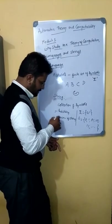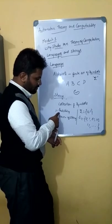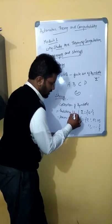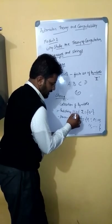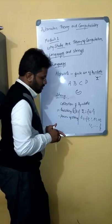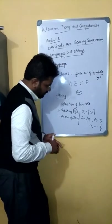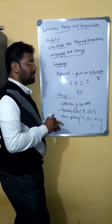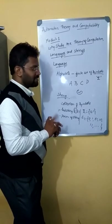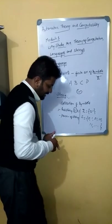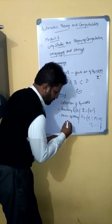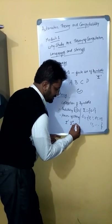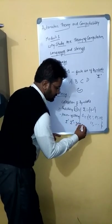Coming back to substring and power of string: a substring is a part of a string. For example, if the string is '11111', a part of it is a substring. The power of a string is also very important to understand. Power of a string indicates the number of occurrences of symbols in a given alphabet, usually denoted as sigma^i. Sigma^0 means 0 symbols.